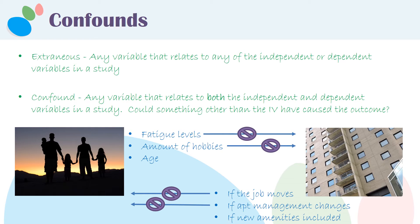Now let's go back and look at age. We know that age is related to whether somebody has children. And is age related to whether somebody lives in an apartment complex? Yeah, actually, it probably is. So age is a confound — age is related to both whether you have children and whether you're going to live in an apartment complex.